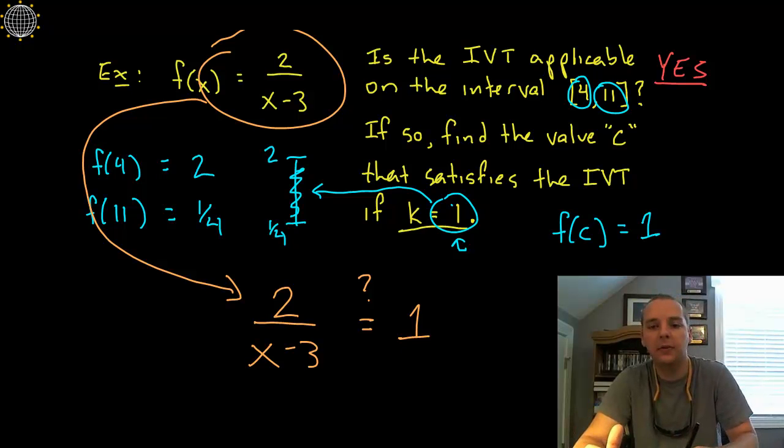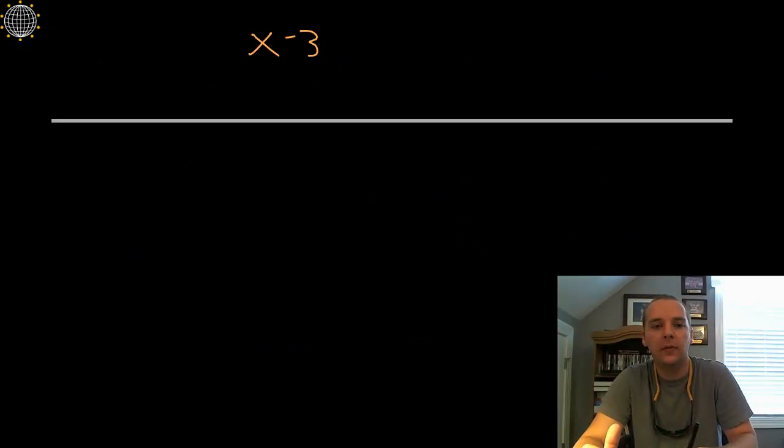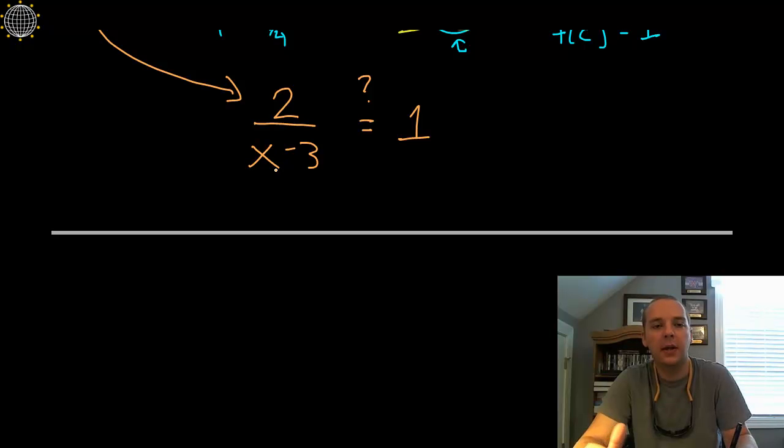So we have to do a little algebra. Let's multiply x minus 3 to the right, so 2 equals x minus 3. Let's add 3 to the left, so we'll get x equals 5. I'll reverse that order there, but yeah, x equals 5.